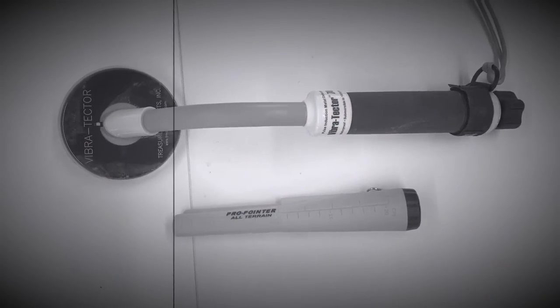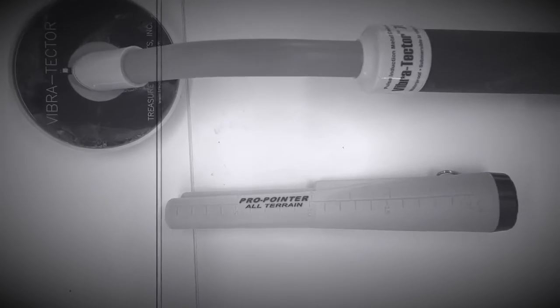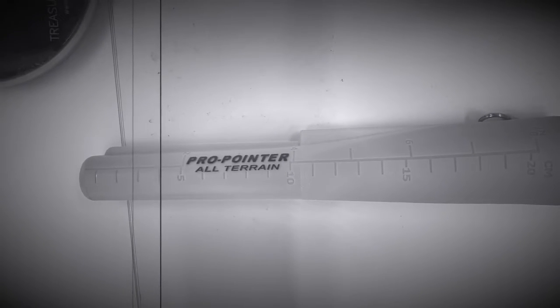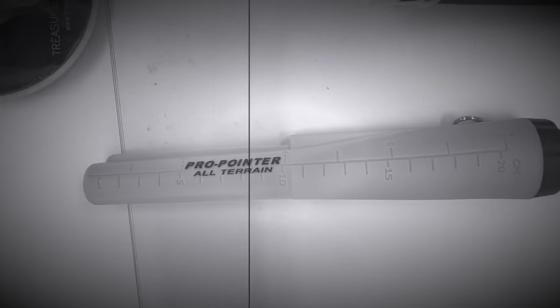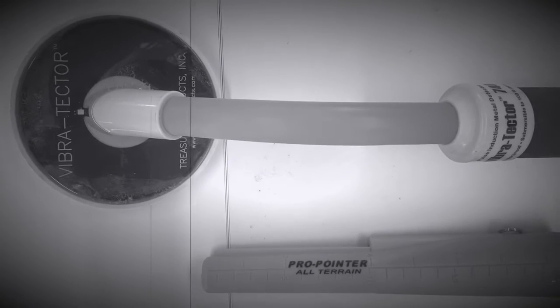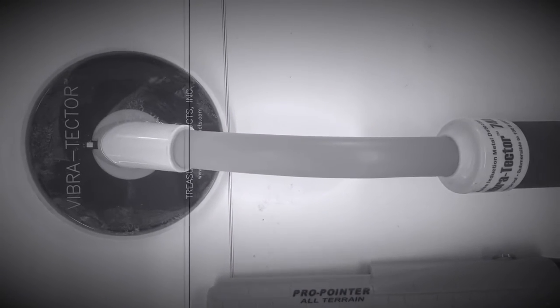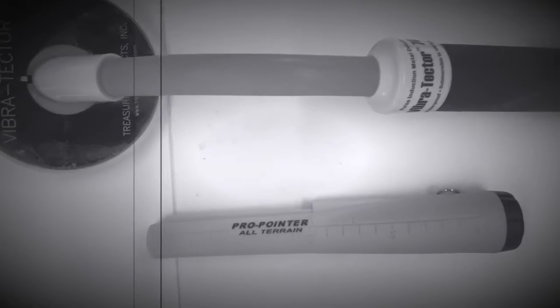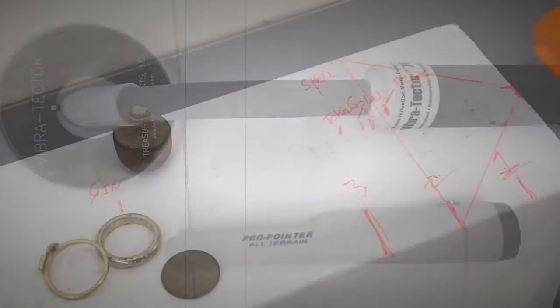So here are the two challengers. I have the Pro Pointer All-Terrain Garrett Carrot. Like I said, I just got it back. And the one I can't say - I kept calling it a handheld pinpointer, which is stupid. It is a handheld diving metal detector. For whatever reason, I could not say it, I could not get those words out my mouth multiple times. It is the Vibra Detector, probably said that wrong. But there you go, two challengers. Now let's check out the channel.